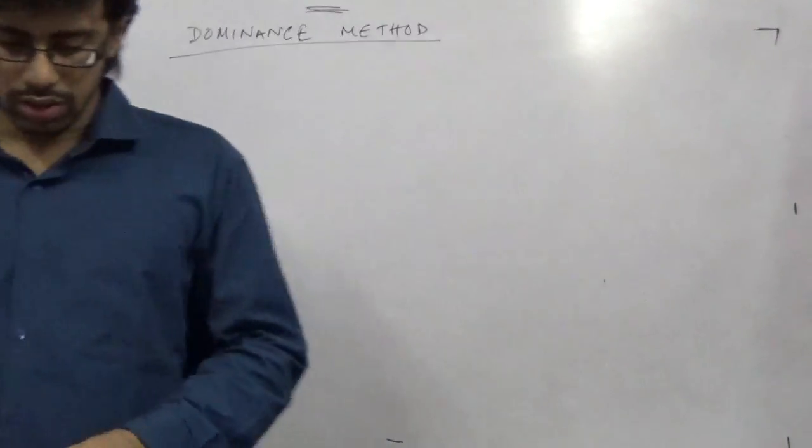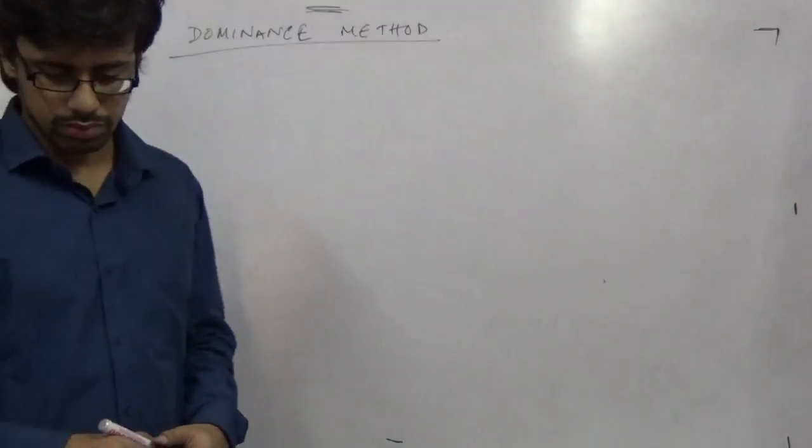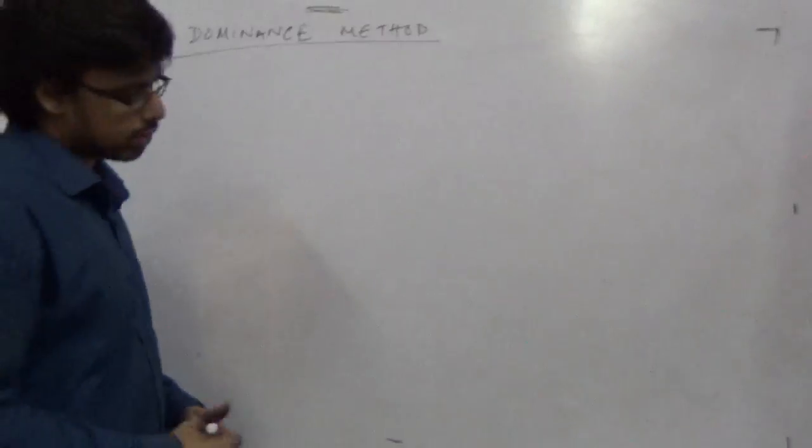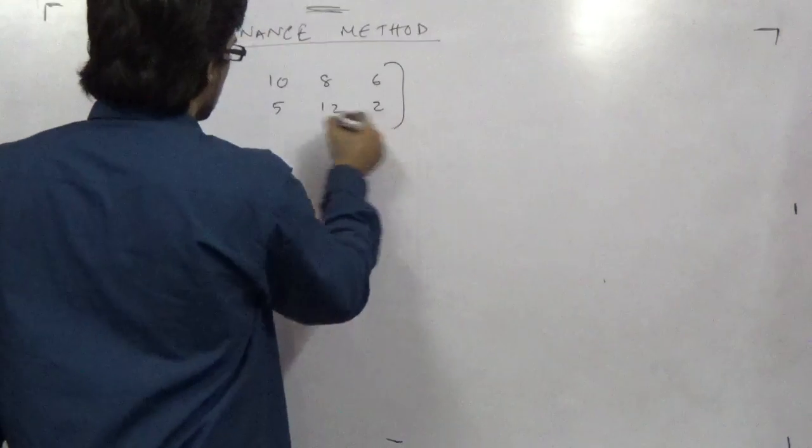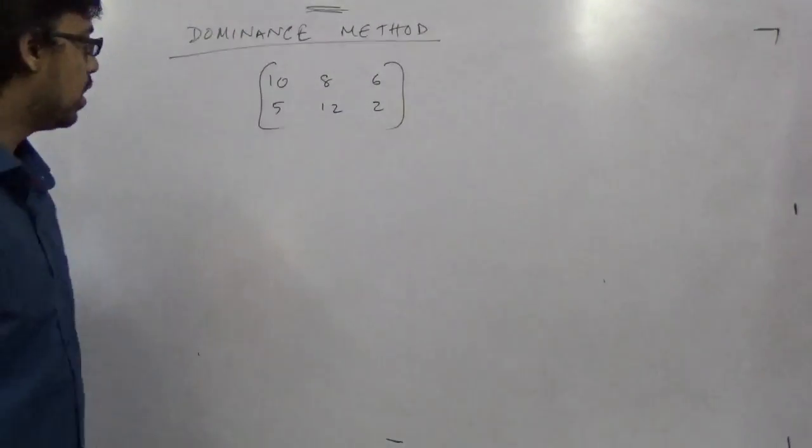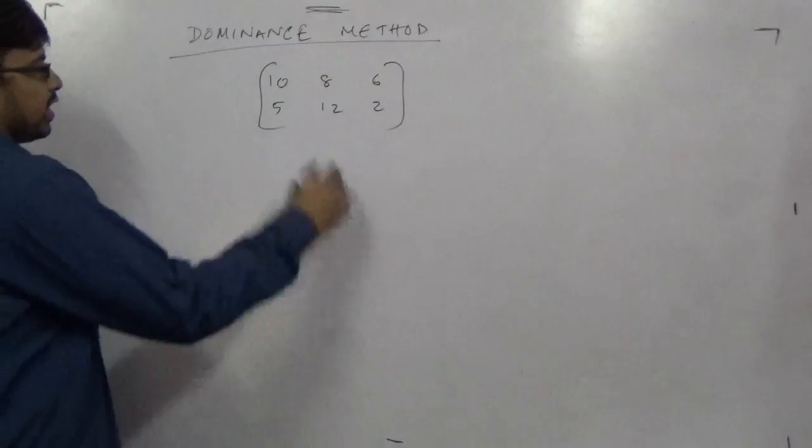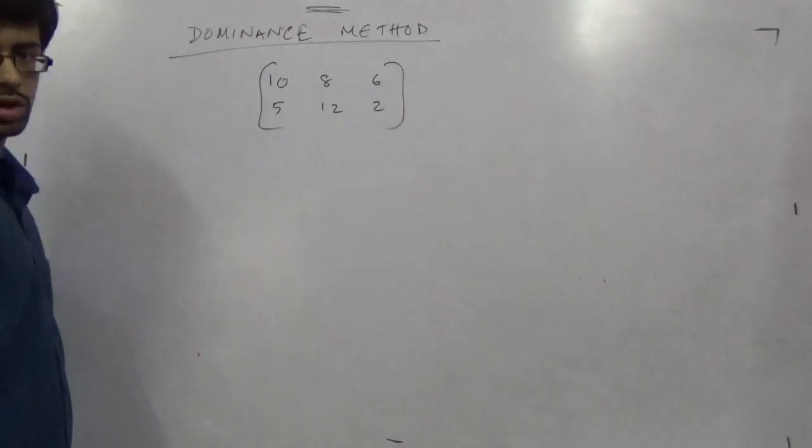Let me give you an example of a dominant structure. This one is very important for game theory solution. Here we have two rows and three columns.